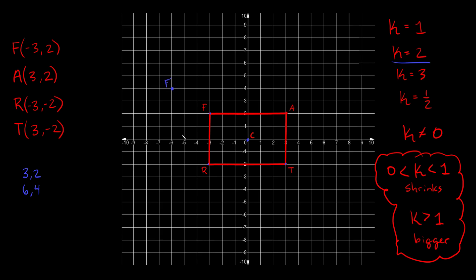Doing the same for A — from C to A is also over three and up two, so doubled is over six and up four, giving us A prime. From C to R it's over three down two, so we go over six down four for R prime. From C to T, same thing — over six and down four gives T prime. Now we have the four corners of our rectangle and we can just connect the dots. This copied rectangle, the image, is twice as big as the original, the pre-image.